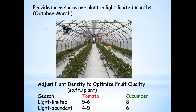Provide more space per plant in light-limited months for tomato — five to six feet per plant, don't jam them in. Reflective surfaces, wide access aisles, space between plants. We get into the high-light time of year, we can have tighter spacing: four to five square feet per plant might be adequate. You're not going to change your yield a whole lot — you'll just get more per plant with lower spacing and bigger fruit. The overall productivity of the square footage will not be disadvantaged by giving them more space, especially during those low-light times of year.